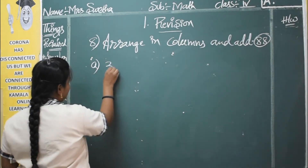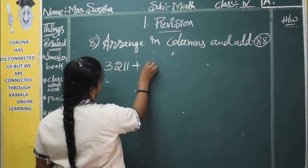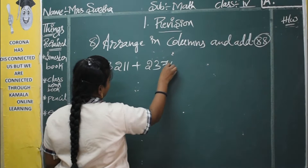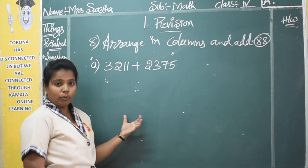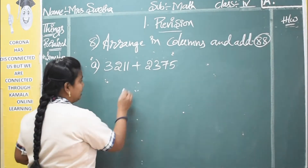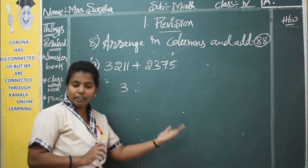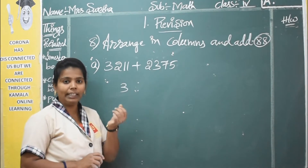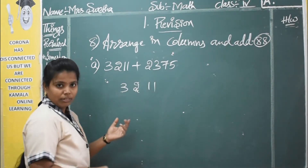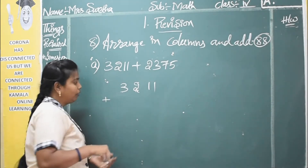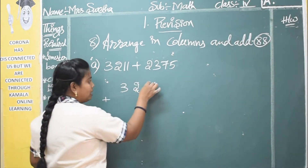So here you have 3217 plus 2217. The question is given in the horizontal form. You have to arrange them in the vertical format and do the addition. Whenever you are writing the numbers, you have to give space — so 3217, give a space. When you are writing the next set, the second set of numbers, you have to write from the last.